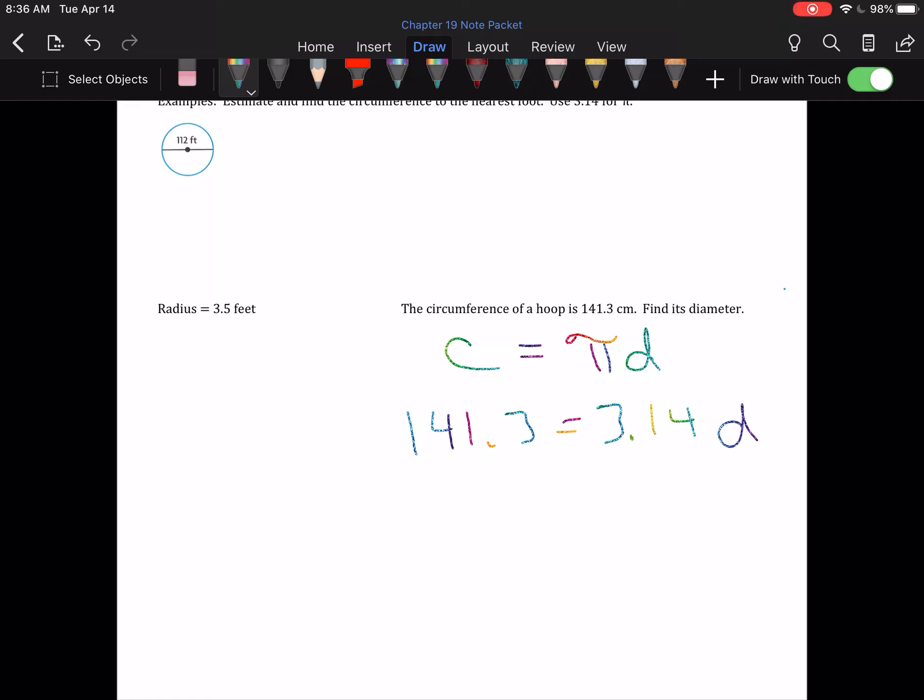3.14 is multiplied to D. So in order to separate it, we will have to divide both sides of this equation by 3.14. Again, yes, I'm expecting you're using a calculator to do the division. We will get 45 centimeters is equal to D.